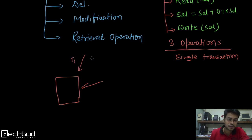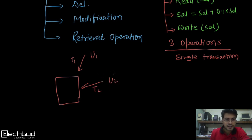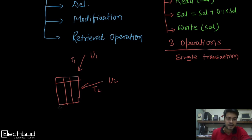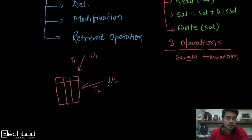Let's say transaction T1 is being performed by user U1, and similarly T2 is being performed by user U2. These transactions are being performed over the same table. Then there is a case where we may have inconsistency or incorrect data.